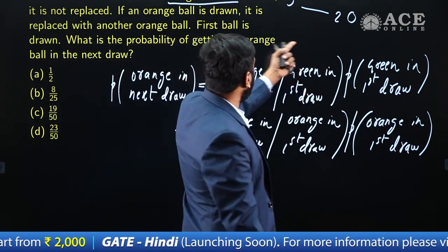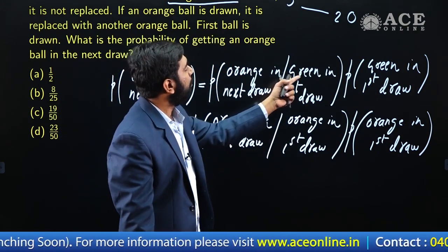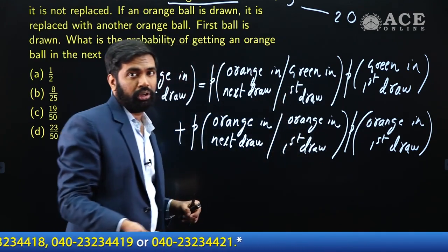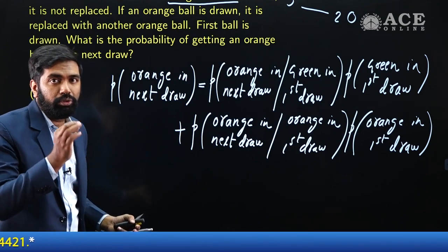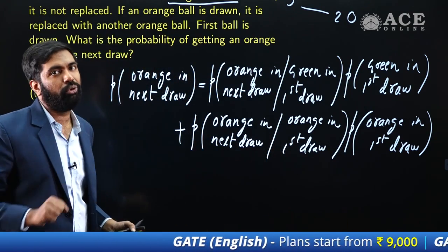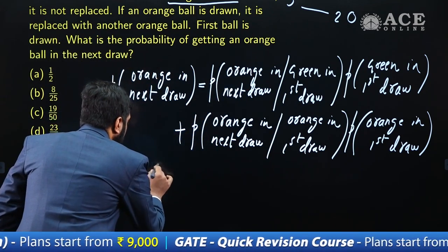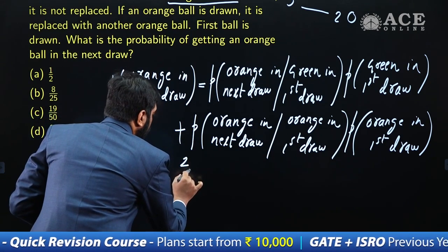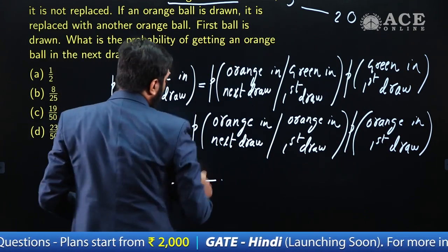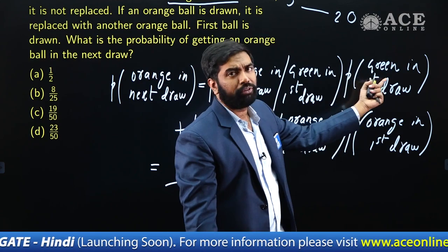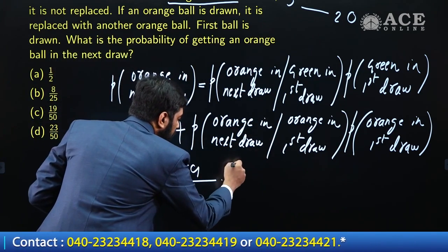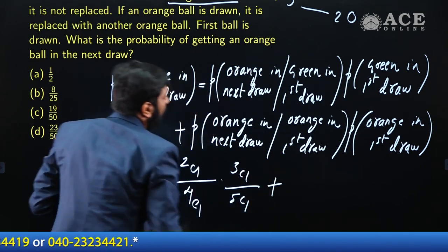Given green was drawn in the first draw: initially 5 objects, one green removed, so 4 remain with 2 orange. P(orange in next | green first) = 2C1 / 4C1. P(green in first) = 3C1 / 5C1. So the first term is (2/4) × (3/5).